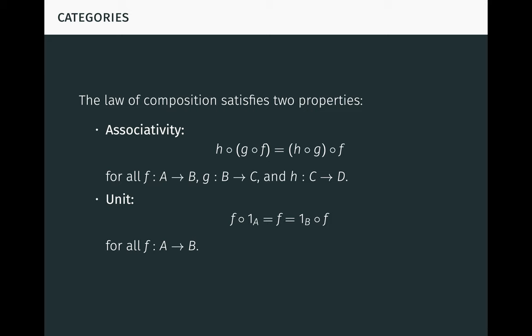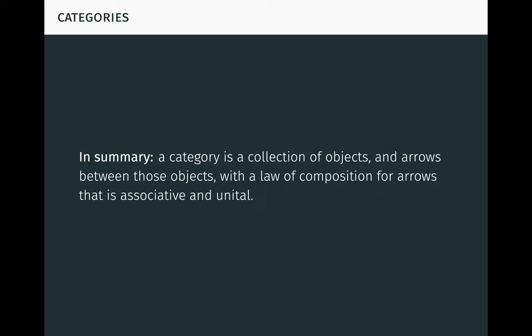These properties seem somewhat technical when written out, but they're actually very natural and they're satisfied in many situations. In summary then, a category is a collection of objects, and arrows between those objects, with a law of composition for arrows that is associative and unital.